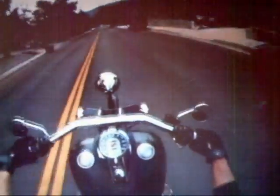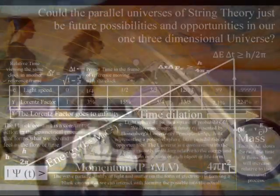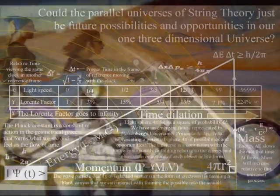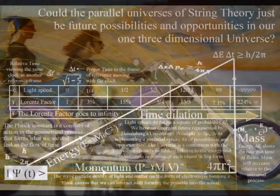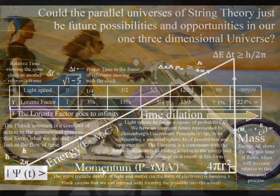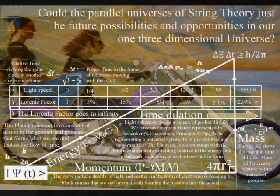Everything is a wave over a period of time relative to the elements of the periodic table, with particle characteristics only as the future unfolds in that frame of reference. Therefore each individual is an interactive part of this process, with Heisenberg's uncertainty principle representing the same uncertainty we have with any future event at the smallest scale of this process.